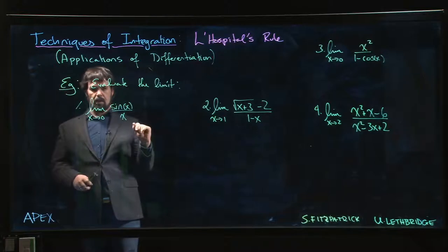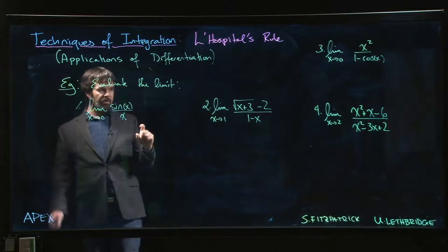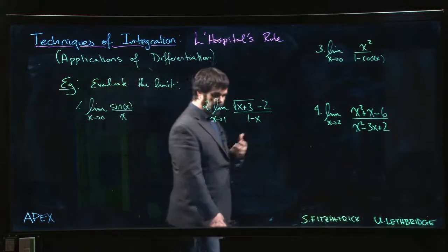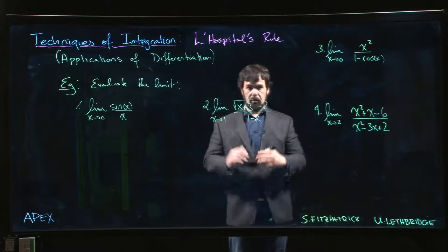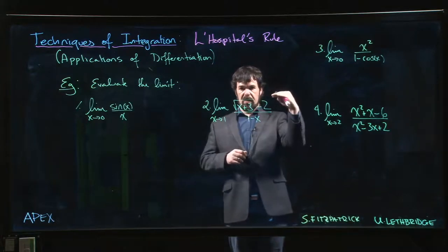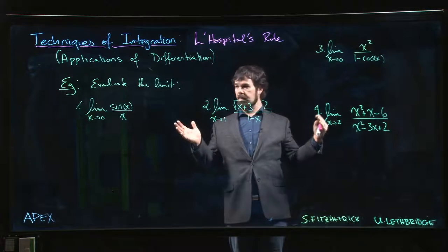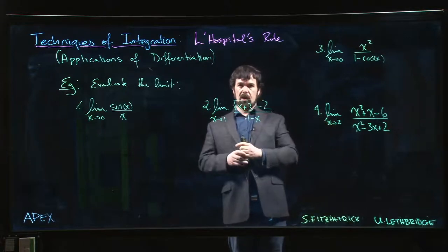The next thing to be careful about: make sure that you're actually confirming that you have a limit of the appropriate type, right? We're looking for either 0 over 0 or infinity over infinity. If we don't have the right type of limit, we can't use L'Hopital's rule.